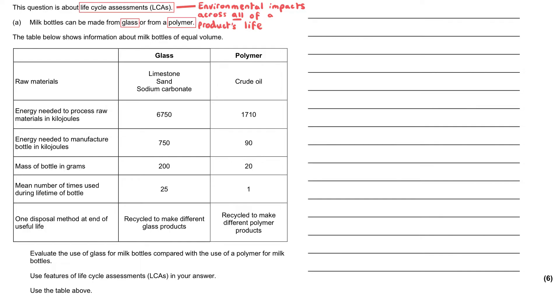Our command is to evaluate the use of glass for milk bottles compared to polymers, using features of the life cycle assessment that we've been given, and we're commanded to use the table above. This is a really common type of question.